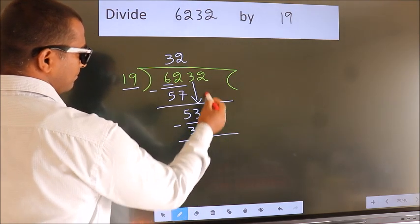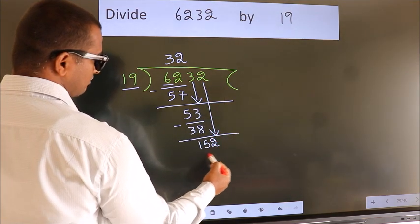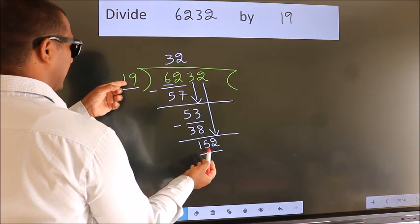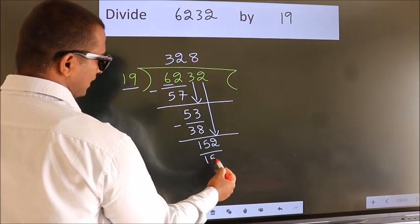After this, bring down the beside number. So, 2 down. So, 152. When do we get 152? In the 19 table, 19 eights, 152.